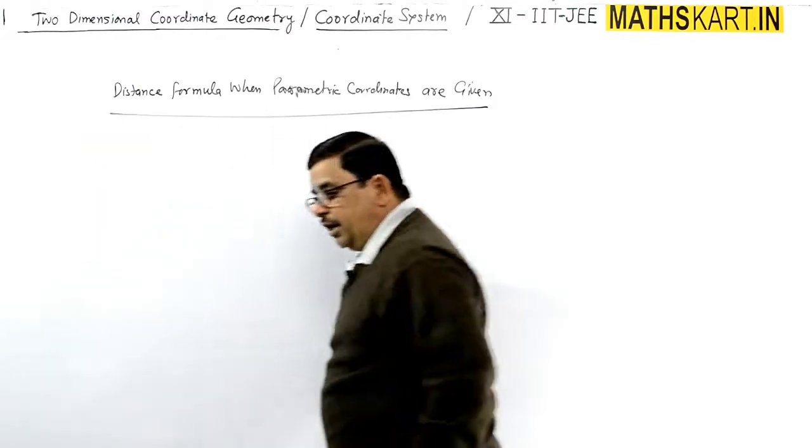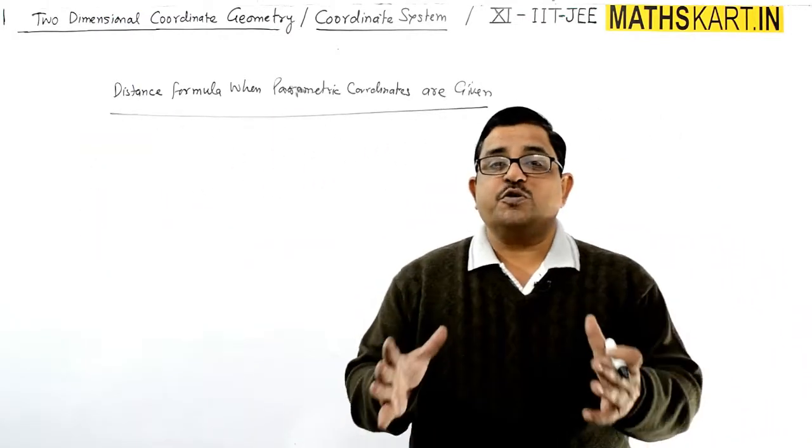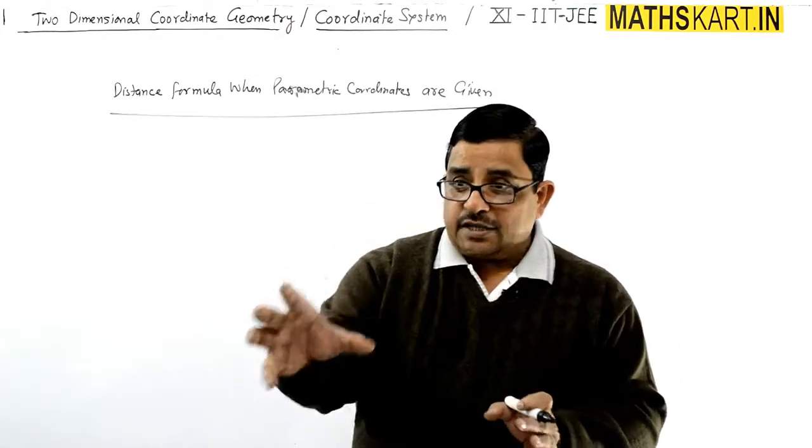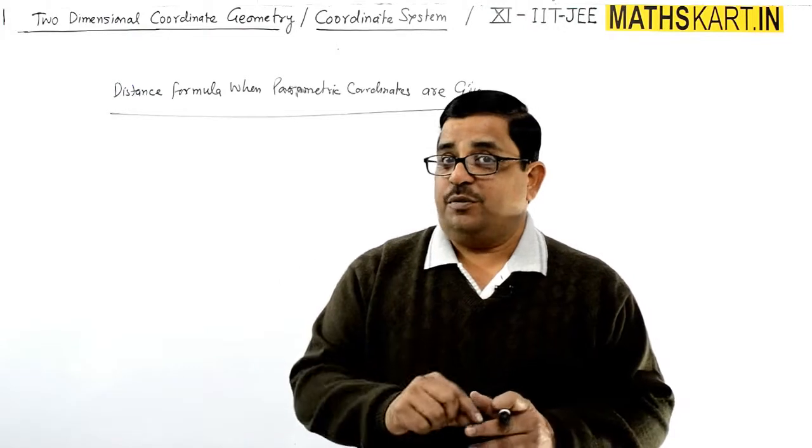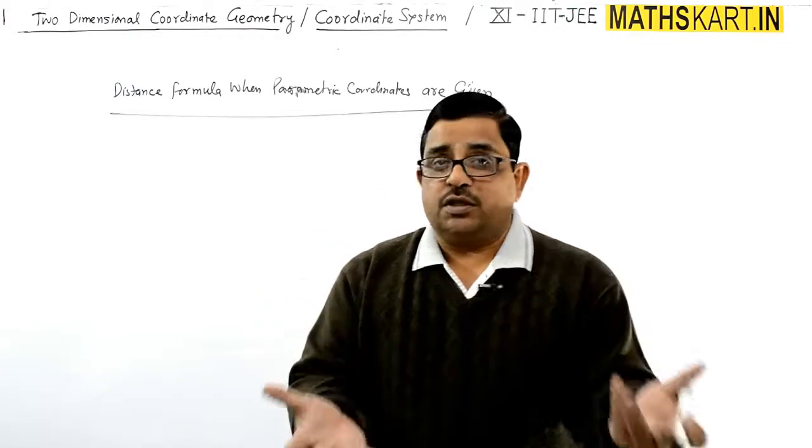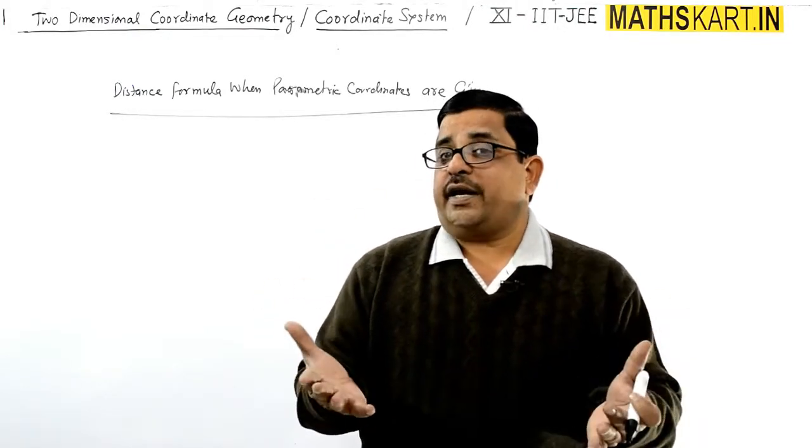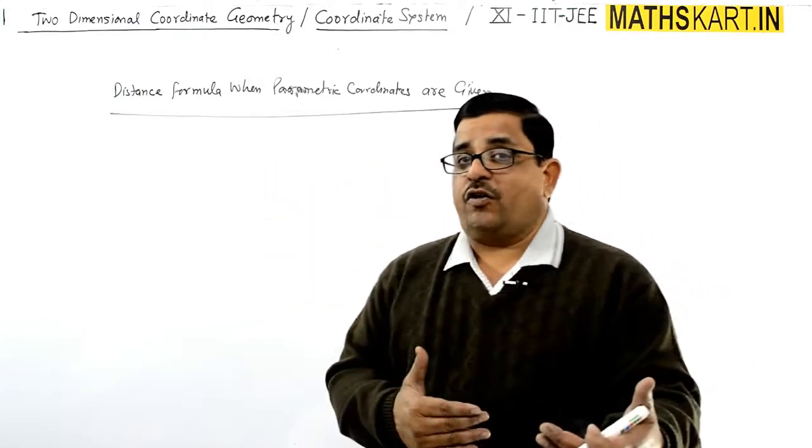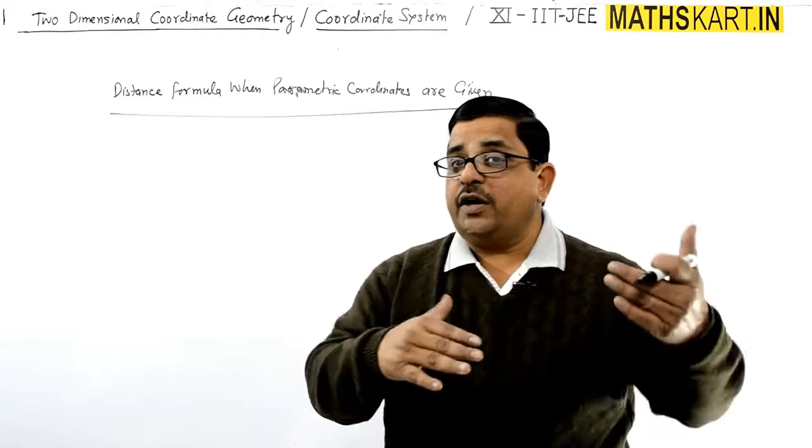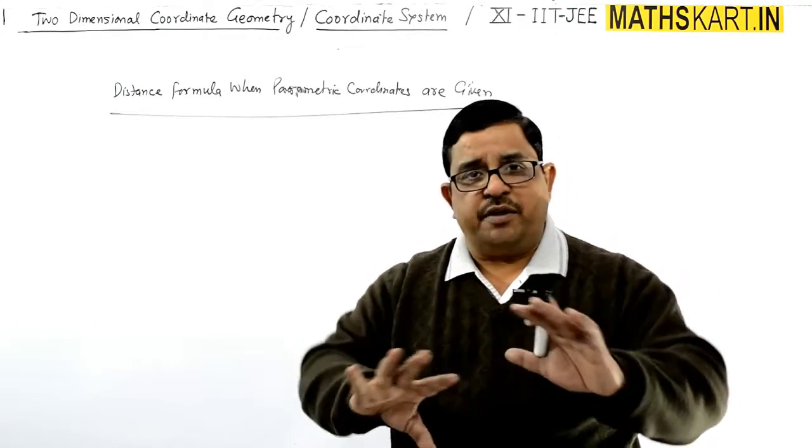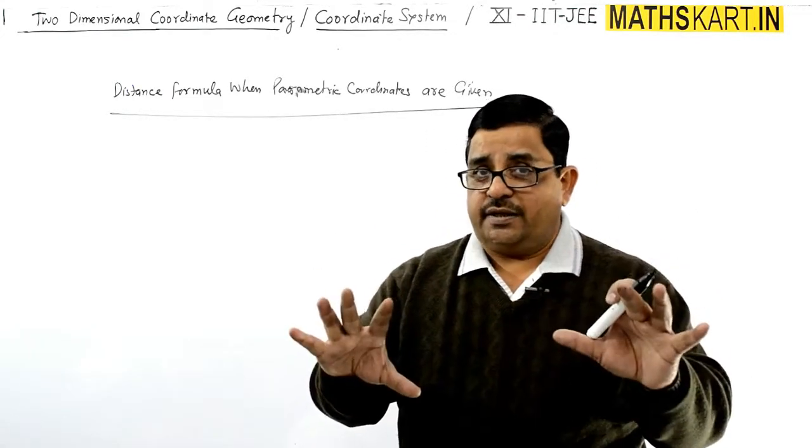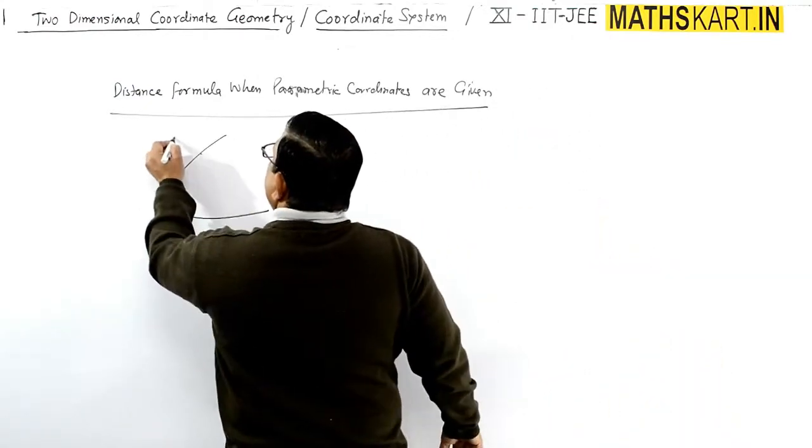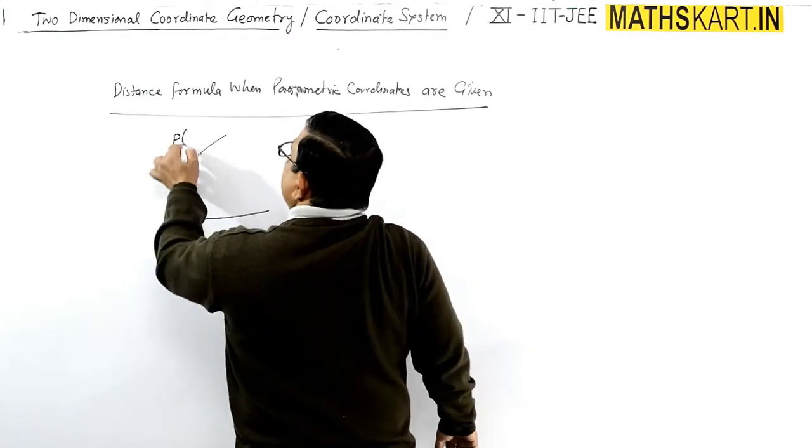Now I have to tell you that you have to use the same distance formula as you use into the Cartesian form. You have to apply the same formula in the same way, no changes are there. Suppose a parabola is, in the parabola there are two points given, in the parametric form we have points given.